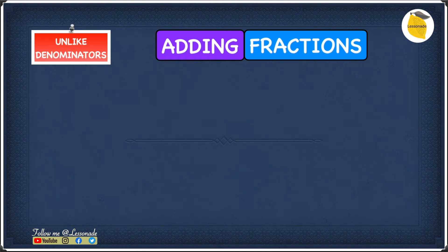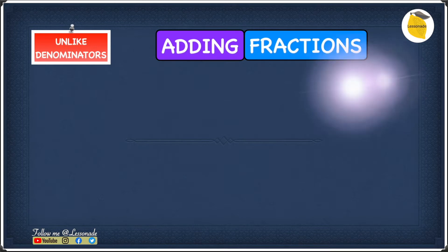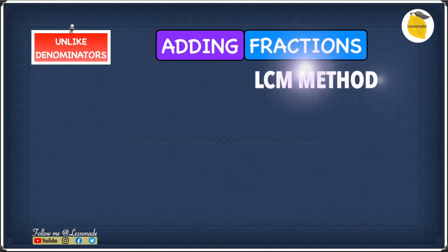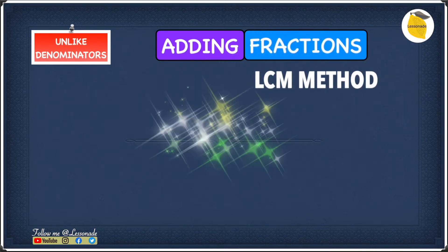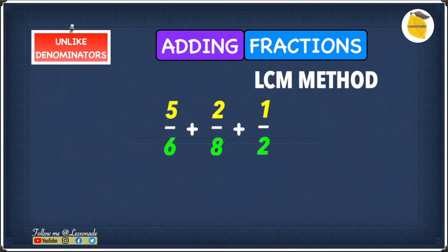Now let's have a look at adding fractions with unlike denominators using the LCM method. The example we have is 5 over 6 plus 2 over 8 plus 1 over 2.